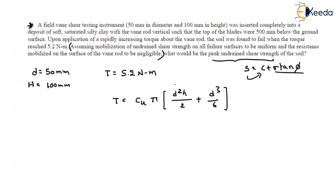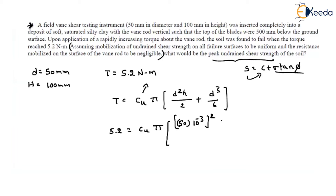The only unknown parameter is Cu. Now substituting into this equation: 5.2 = Cu × π × [(50×10⁻³)² × (100×10⁻³)/2 + (50×10⁻³)³/6]. I am substituting the torque value in Newton-meters, so all dimensions must be in meters.